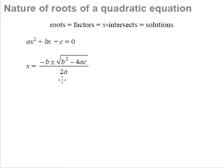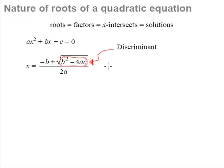This is the general formula, and later on in the chapter we will try to derive how this general formula comes about. What is more important now is what goes on inside it. We cannot square root a negative number. So what happens if b² minus 4ac happens to be a negative number? Because this expression b² minus 4ac is so important, it has a name — we call it the discriminant.